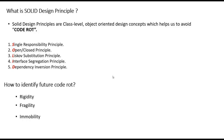Let us see one by one what these five SOLID principles are for object-oriented programming like Java. In this video, I am going to concentrate only on the Single Responsibility Principle; the others I will cover in the next videos. So what is the Single Responsibility Principle? It states that a class should have one and only one responsibility. In other words, a class should have only one reason to change.